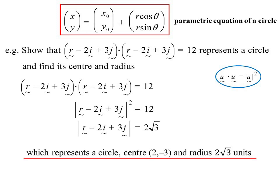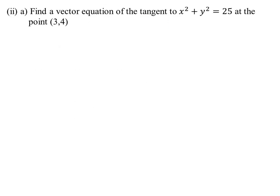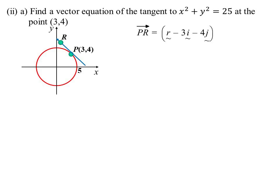Find a vector equation of the tangent to this circle at the point (3,4). I'll draw myself a picture. Now, r, if I just place it somewhere on that tangent, because I want a vector equation, the vector PR, head minus tail, would be r - 3i - 4j. I also know the position vector of P is 3i + 4j. But you'll recall that the radius is perpendicular to the tangent, so their dot product would equal 0.